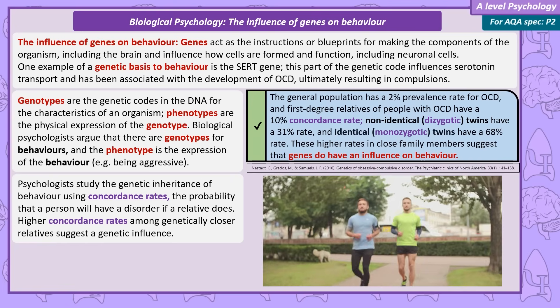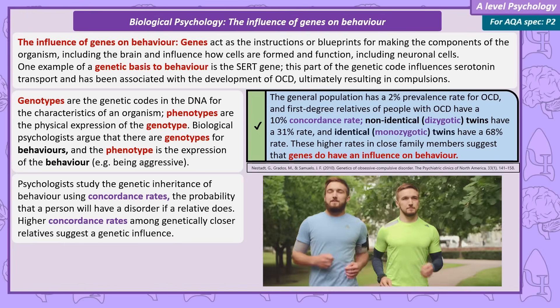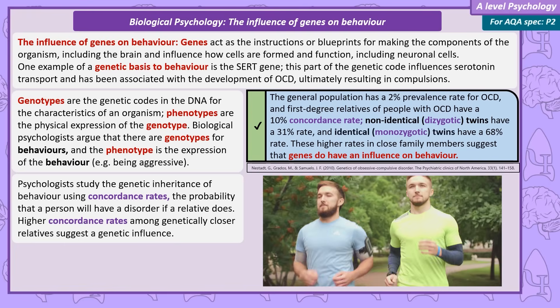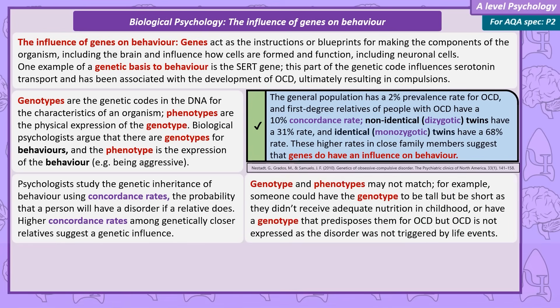Identical twins who share 100% of their genetic makeup — also known as monozygotic twins — have been shown to have a 68% concordance rate for OCD, while non-identical or dizygotic twins have a 31% concordance rate. However, in all of these cases the likelihood of a relative also having OCD is lower than their shared genetic material. This is because genotypes and phenotypes don't always match — someone could have a genotype for being tall, but without proper nutrition when growing up, the phenotype will be shorter than their potential.